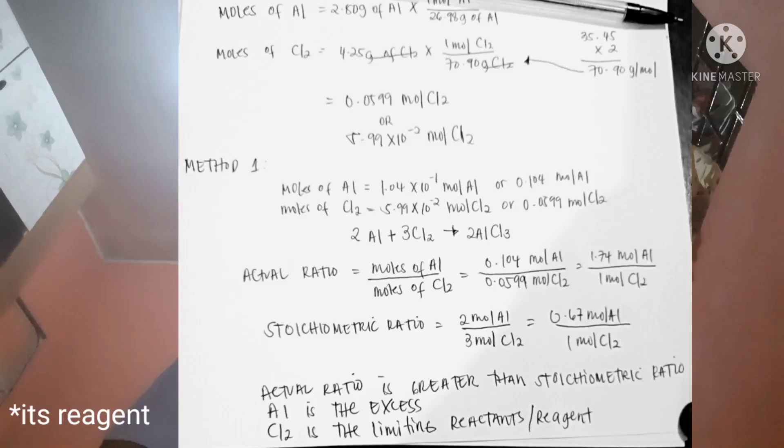After natin makonvert ang mga given mass and moles, pwede na tayong magsimula na magcompute. So this is the moles of aluminum and moles of chlorine gas. The method 1 we use is to compute the actual ratio which a moles of aluminum of our chlorine gas is equal to 0.104 mole of aluminum over 0.0599 mole of chlorine gas. Our answer is 1.74 mole of aluminum over 1 mole of chlorine gas. The stoichiometric ratio is 2 came from balanced chemical equation. So there are 2 moles of aluminum divided by 1 mole of chlorine gas. Our answer is 0.67 mole of aluminum over 1 mole of chlorine gas.